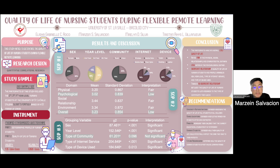To specifically decide which students would take part in the study, a random selection was conducted using the Wheel of Names. The instrument used was a modified standardized questionnaire where the first portion answers the demographic data of the respondents and the second portion assesses the quality of life of nursing students.